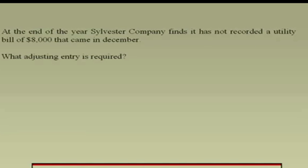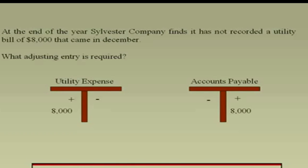At the end of the year, Sylvester Company finds it has not recorded a utility bill of $8,000 which came in December. The accountant has done the trial balance but forgot this bill. You have an expense because you received the bill and the service — expense goes up $8,000. You owe money to a supplier, so accounts payable liability is plus $8,000.